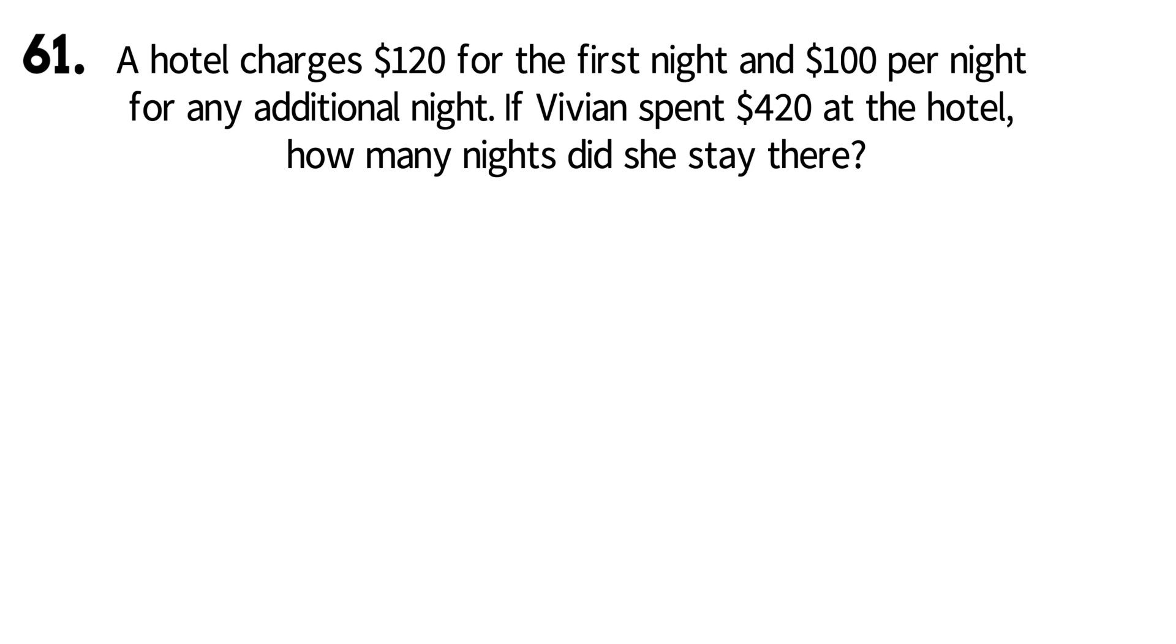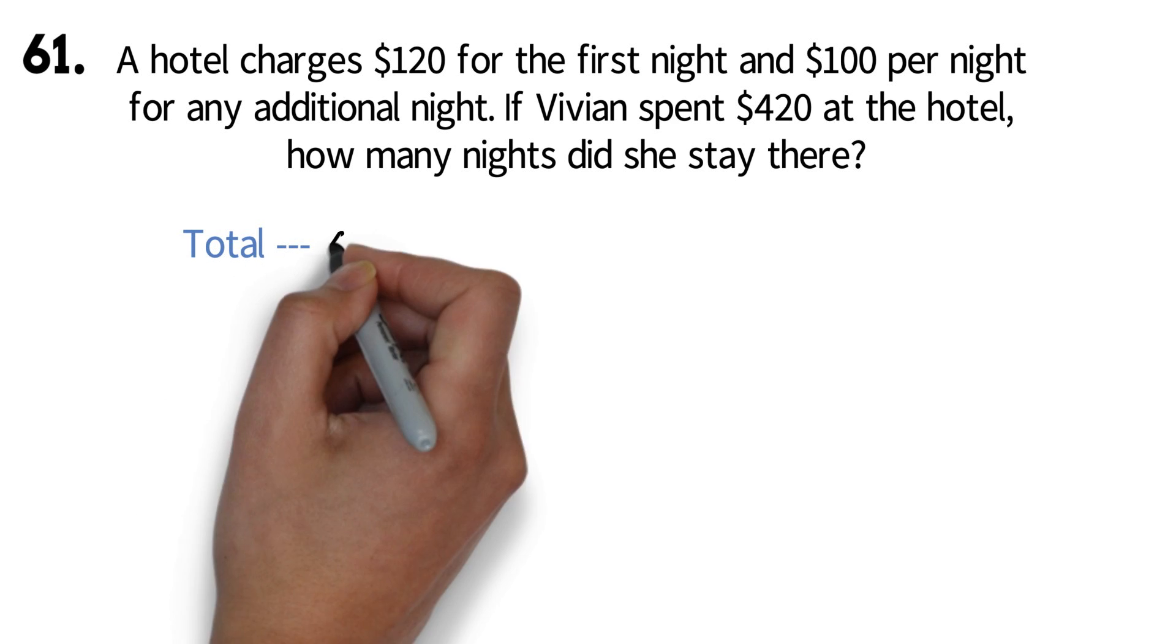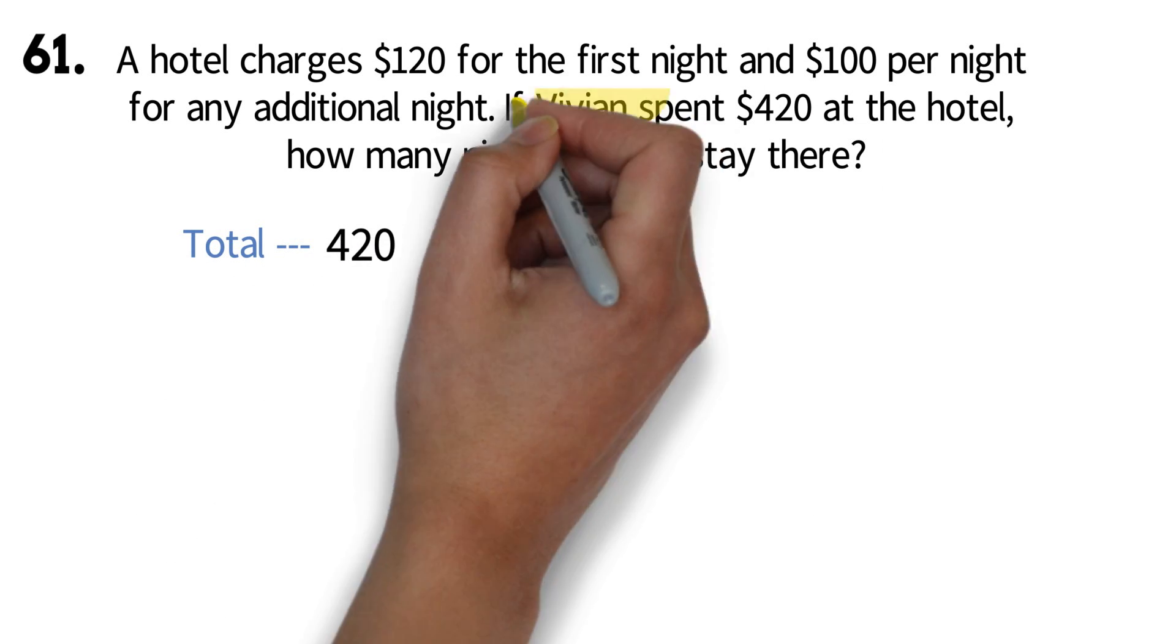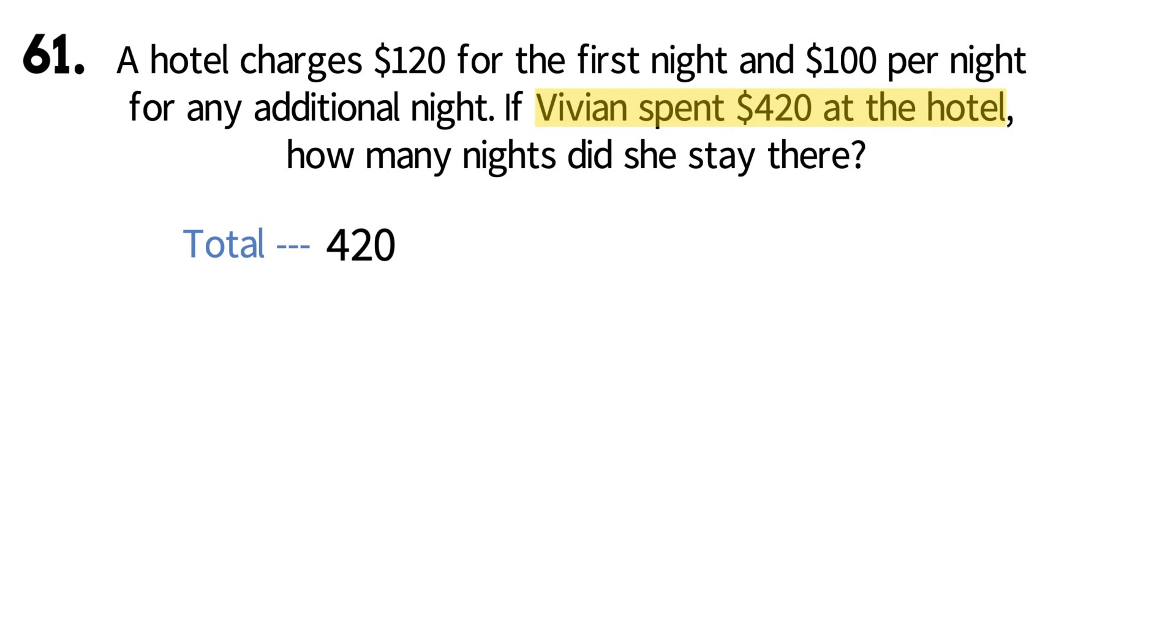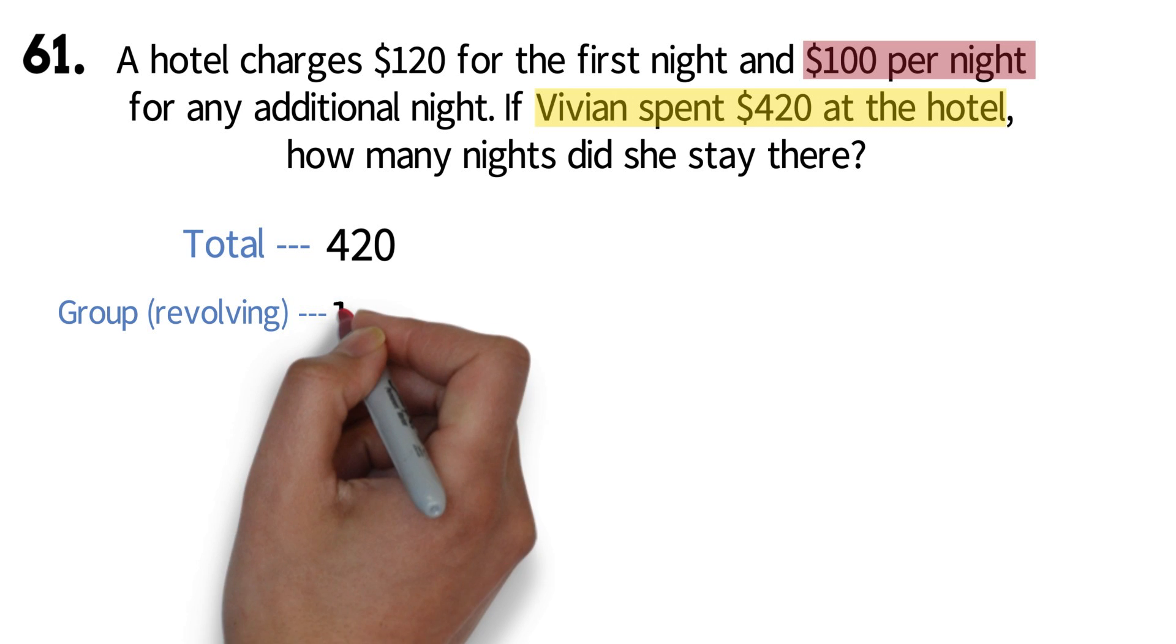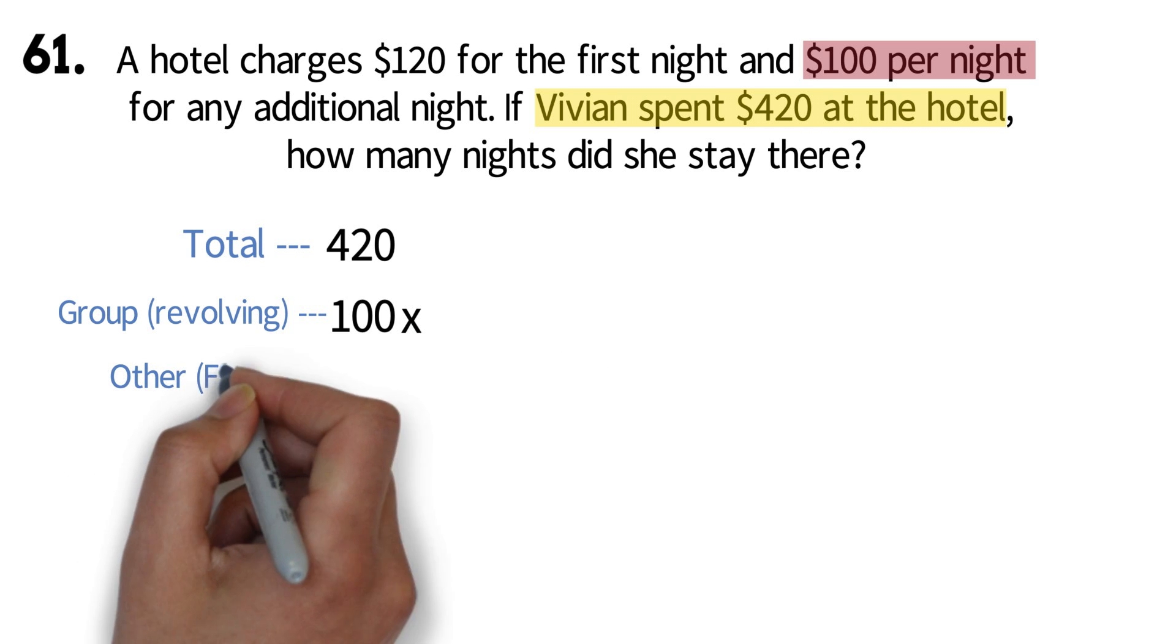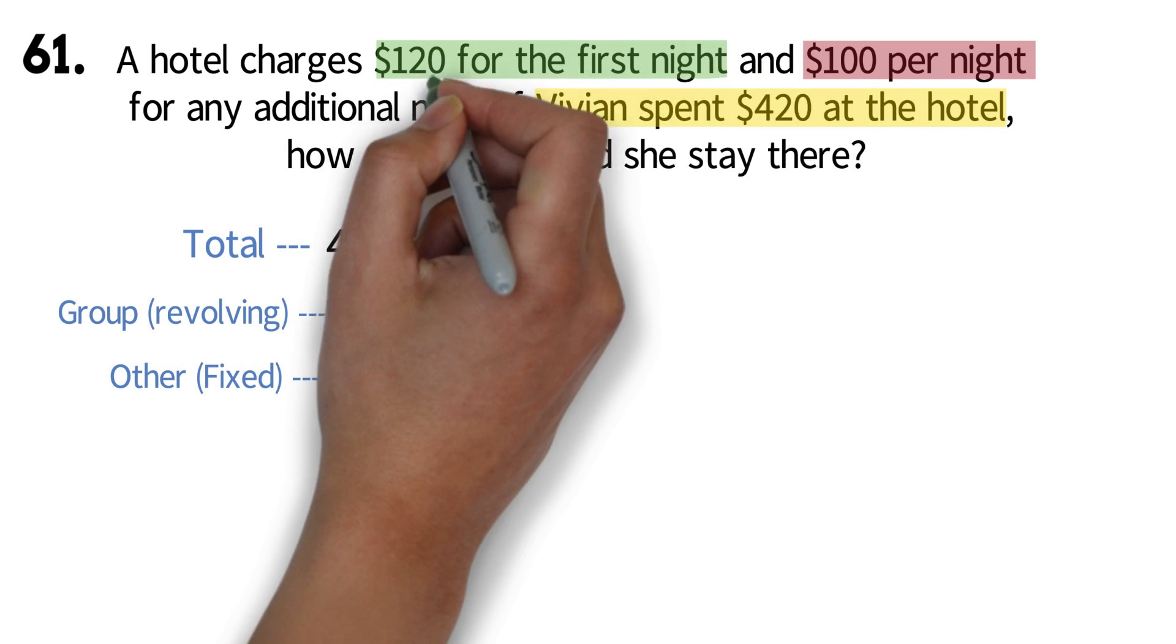So again, we will have our total. Here, the total is $420. This is the total amount of money Vivian spent at the hotel. The group, which we are calling the revolving, is the value that keeps happening. Usually per day or per hour or something like that is with it. So here, we have $100 per night. So this will be $100. We also know the group has the x. Finally, we have what is left, or the fixed value. Here, it is $120 for the first night.